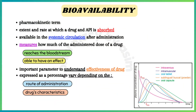Bioavailability is a pharmacokinetic term that describes the extent and rate at which a drug or other active substance is absorbed and becomes available in the systemic circulation after administration. In simpler terms, it measures how much of the administered dose of a drug reaches the bloodstream and is able to have a pharmacological effect. Bioavailability is an important parameter for understanding the effectiveness of a drug and its dosage regimen. It is expressed as a percentage and can vary depending on the route of administration and the drug's characteristics.